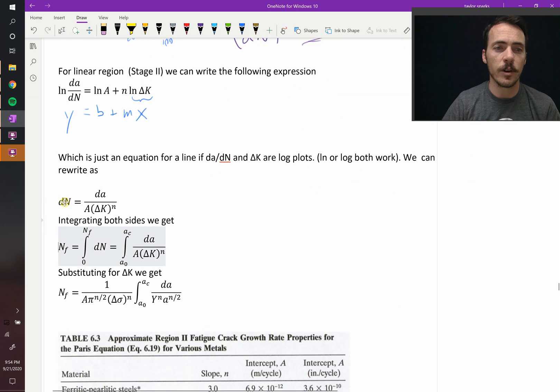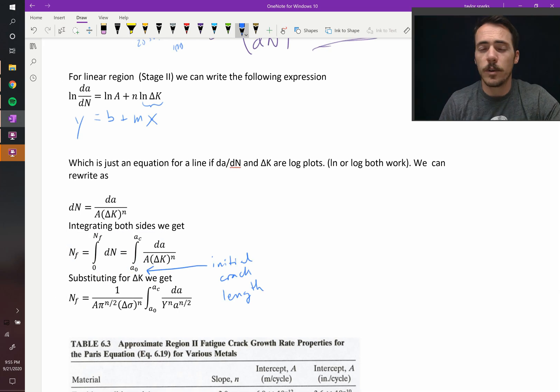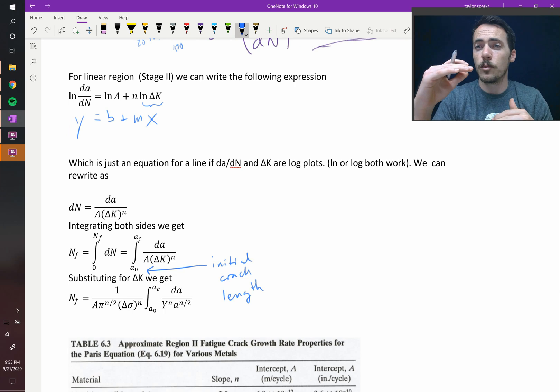Now, we can integrate both sides by their respective variable that's changing. On the left, we're going to integrate over all the cycles, from zero cycles all the way up to the number of cycles till failure. We're going to integrate the cycles, dN. So, that's really easy. It's just going to be the number of cycles till failure. That's an easy integral to take. And on the right-hand side, what's changing is the crack length. So, we're going to integrate from its initial crack size, A naught. Our initial crack length is where it starts at. And we're going to integrate all the way up into the critical crack length. That's when it's going to fail.